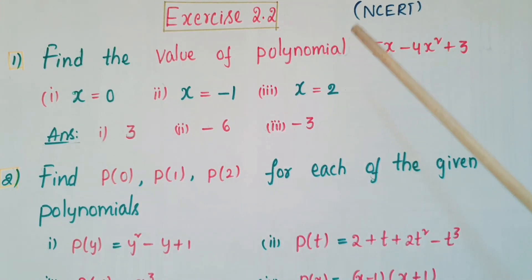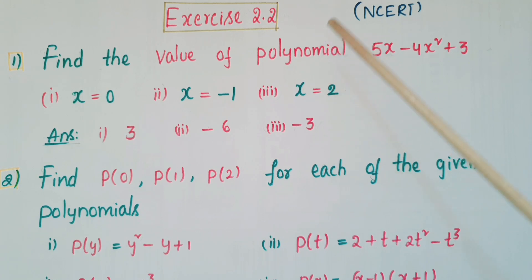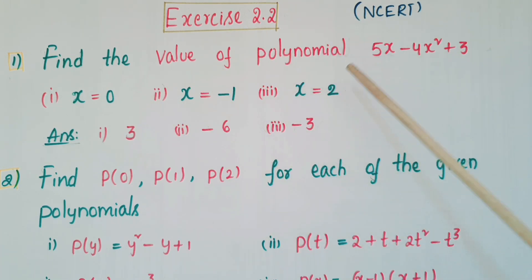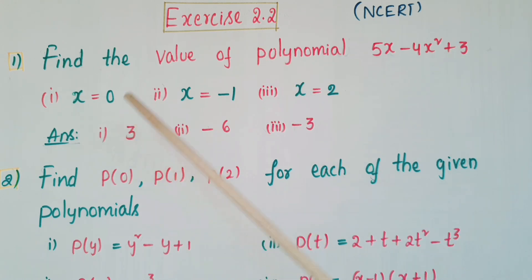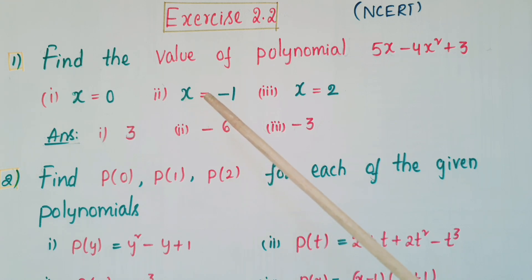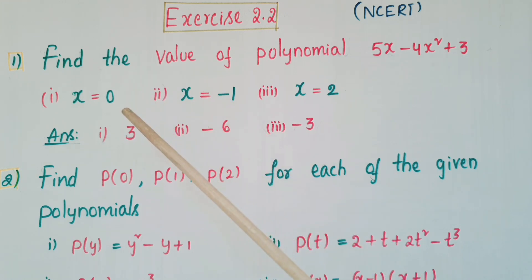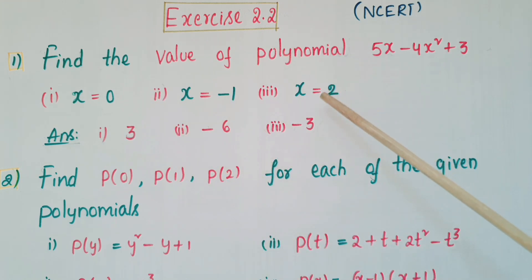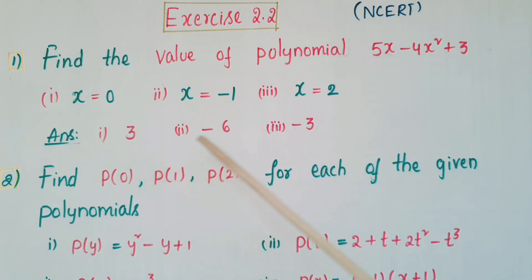Now do this exercise — this is exercise 2.2 from NCERT. First question: find the value of the polynomial 5x - 4x² + 3 when x = 0, x = -1, and x = 2. Replace these x values in this polynomial and we get the answers: 3 for the first, -6 for the second, and -3 for the third.